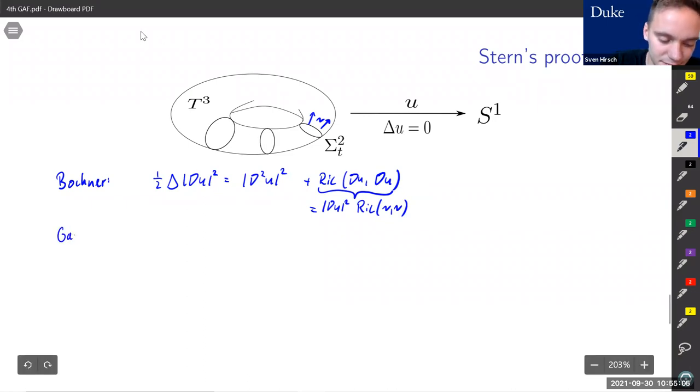This term Ricci nu nu also appears in another formula, namely the Gauss equations. The Gauss equations tell us that twice Ricci curvature nu nu equals the scalar curvature of M minus twice the Gaussian curvature of the level sets plus the mean curvature of the level set squared minus the second fundamental form squared. Combining both these equations and integrating, we get the integral over the torus.